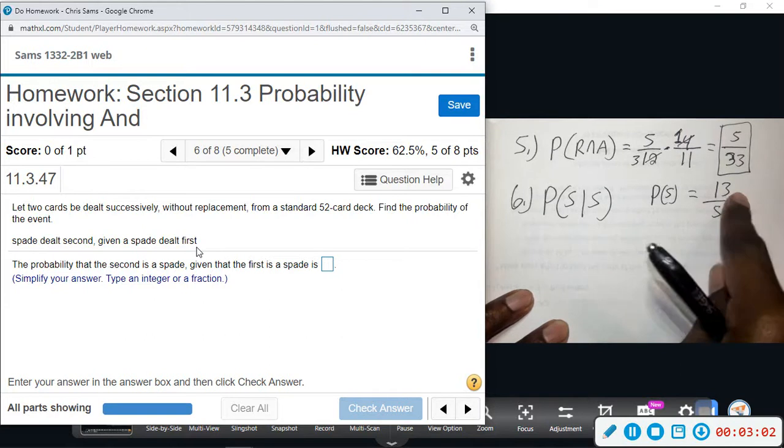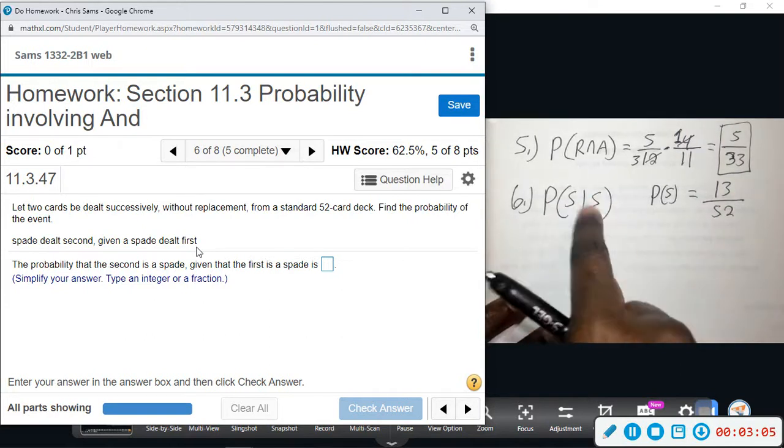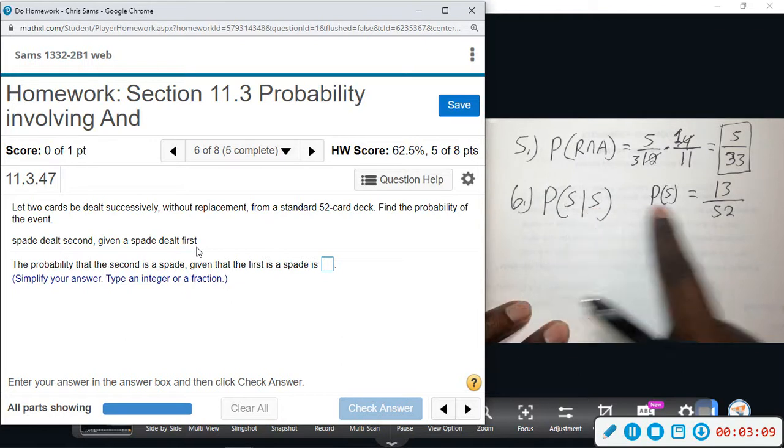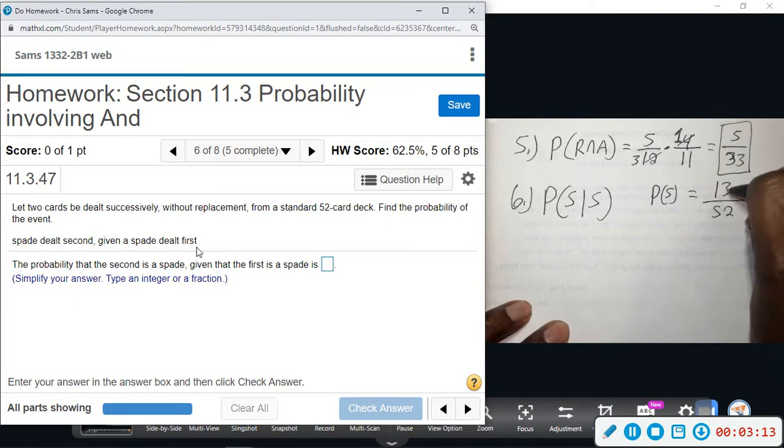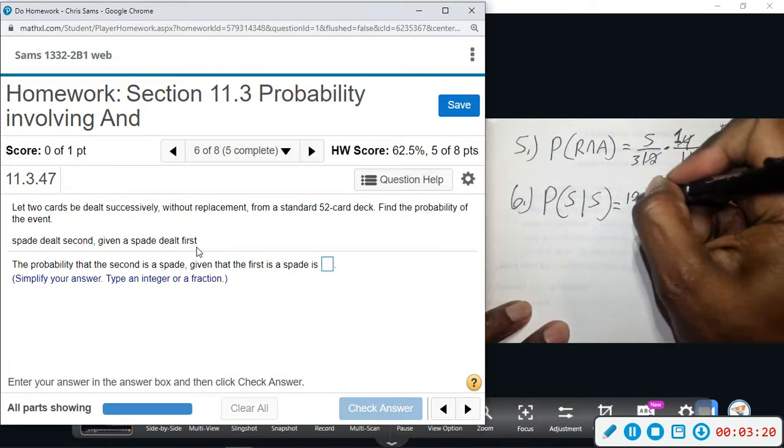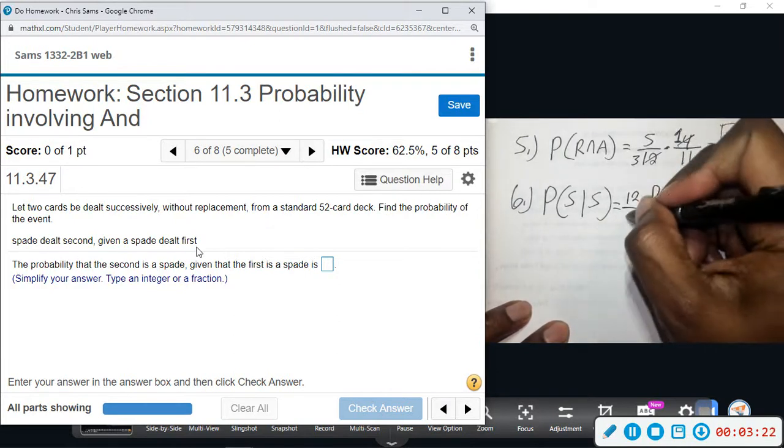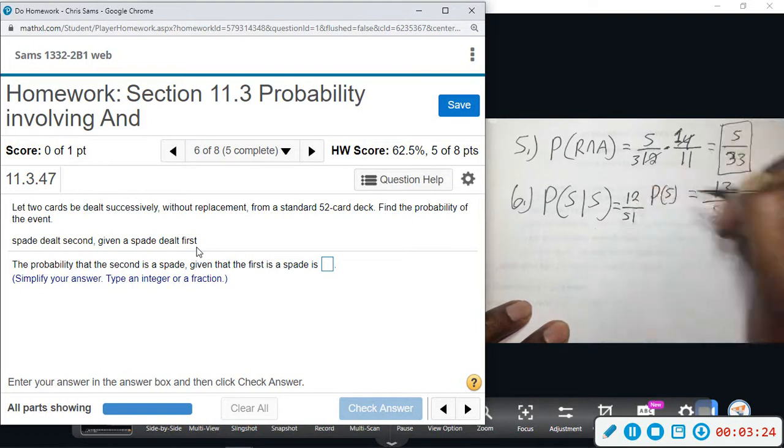All right, but once you take one, so the probability of getting a spade once one has already been dealt, the second card being a spade means that we now need to take one away from both groups. So the probability that the second card is a spade, now there's only 12 spades and there were 51 cards total left.